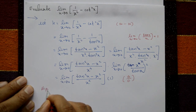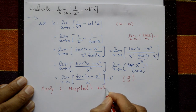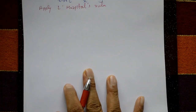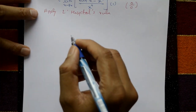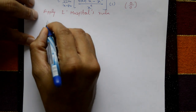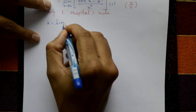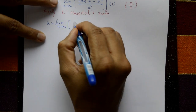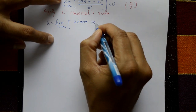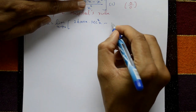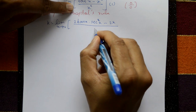This is 0/0 form, so apply L'Hôpital's rule. Differentiate numerator and denominator separately: differentiate tan²x gives 2·tan x·sec²x, minus differentiate x² gives 2x, divided by differentiate x⁴ gives 4x³.